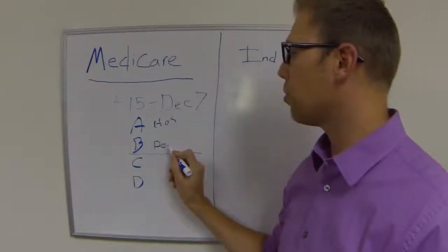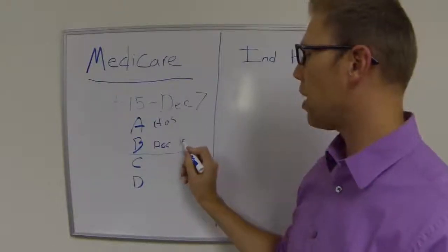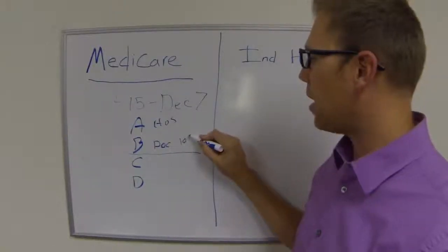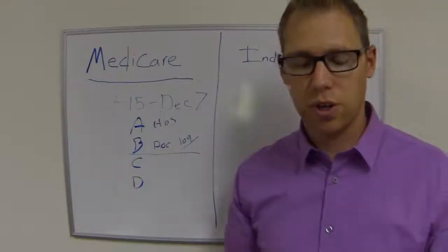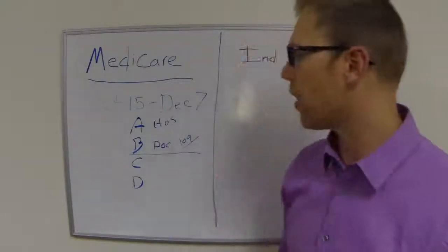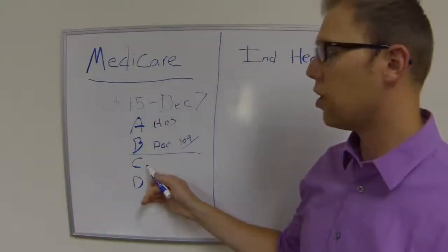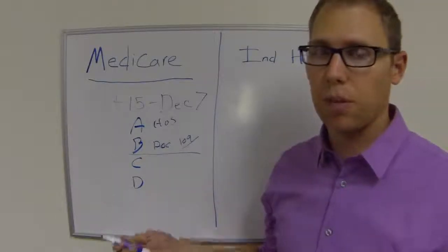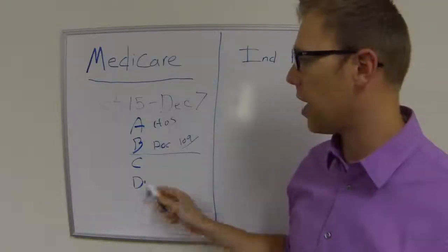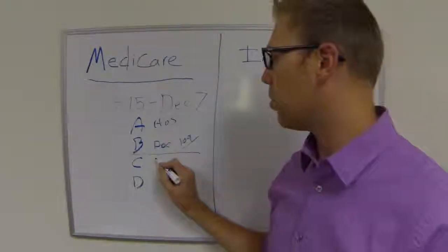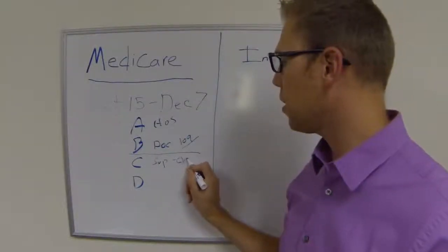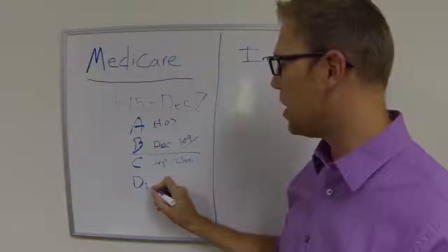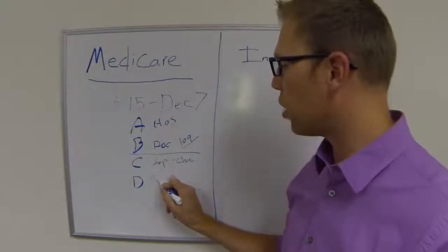Part B is for doctor bills, and this you usually pay about $109. It's dependent upon what you paid in over your lifetime for taxes. Part C would be your choice — your supplement, your MAPDs, whatever you're looking at. We usually say that's your supplement or your choice plan, and then we have Part D, which is for drugs.